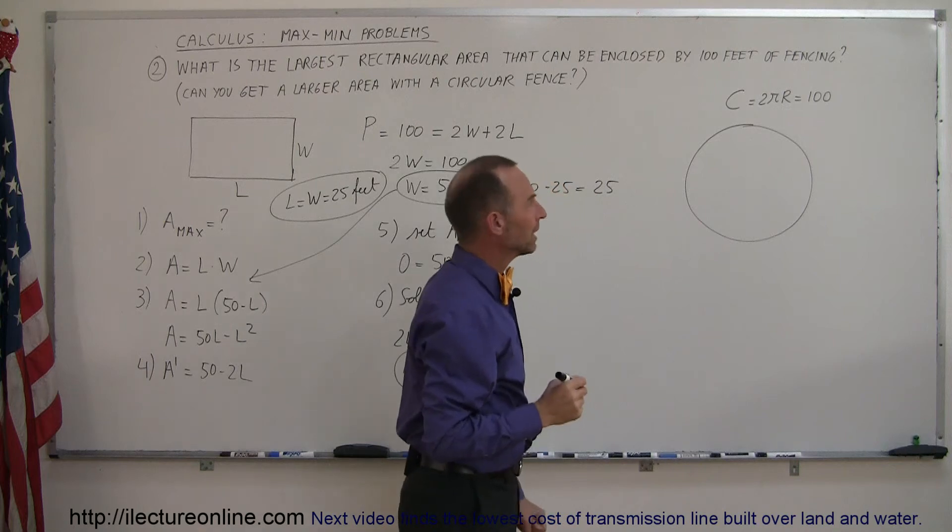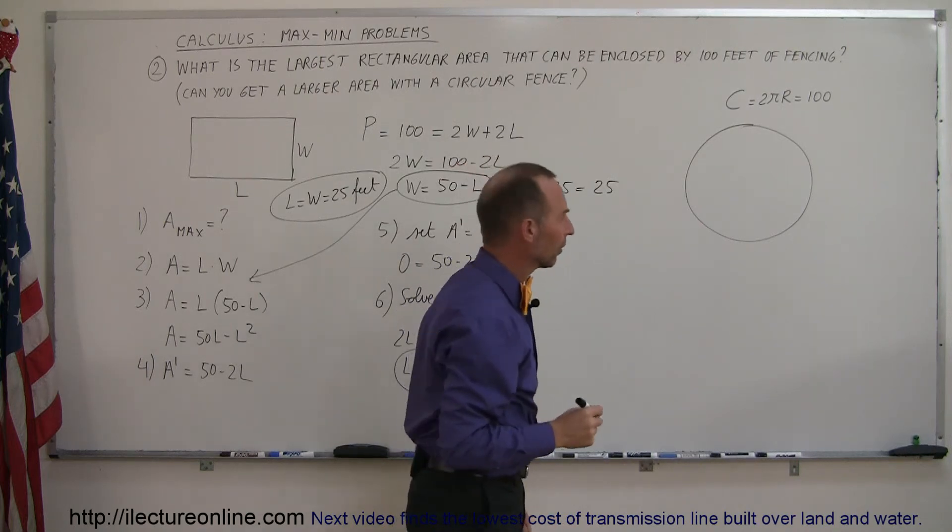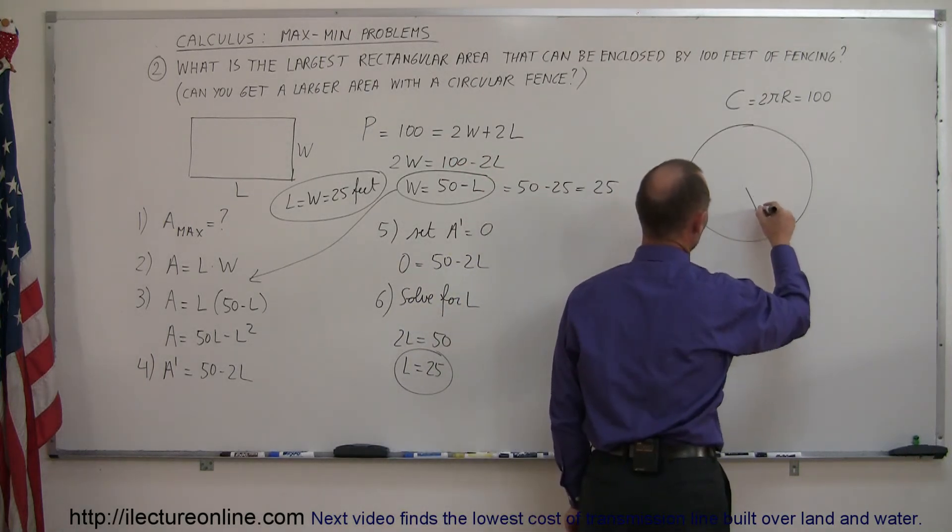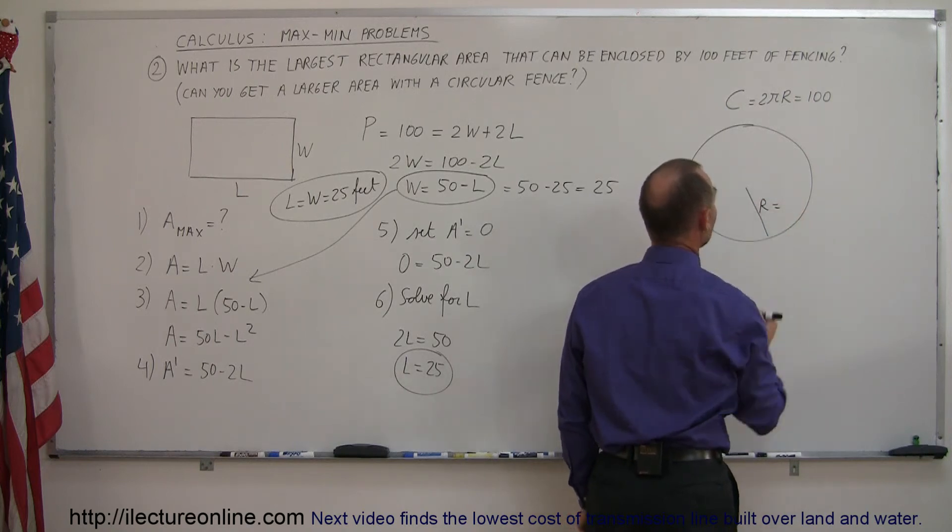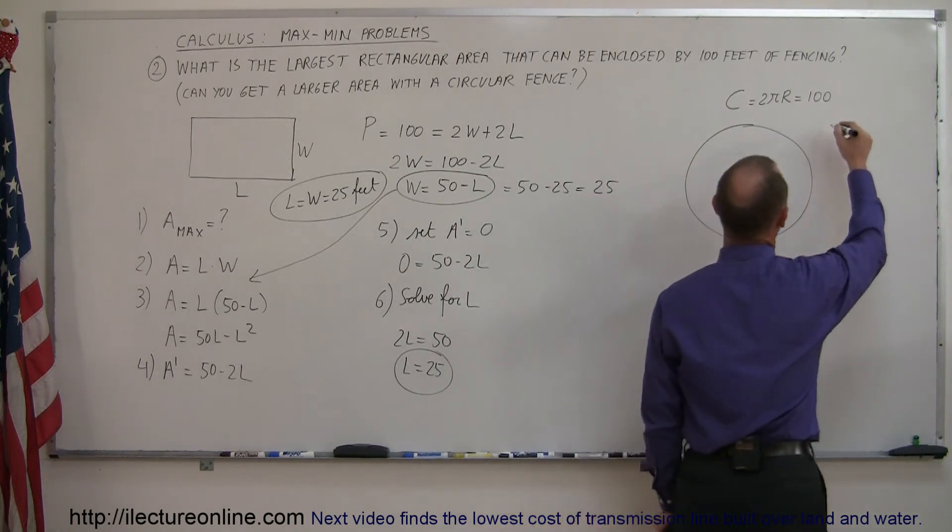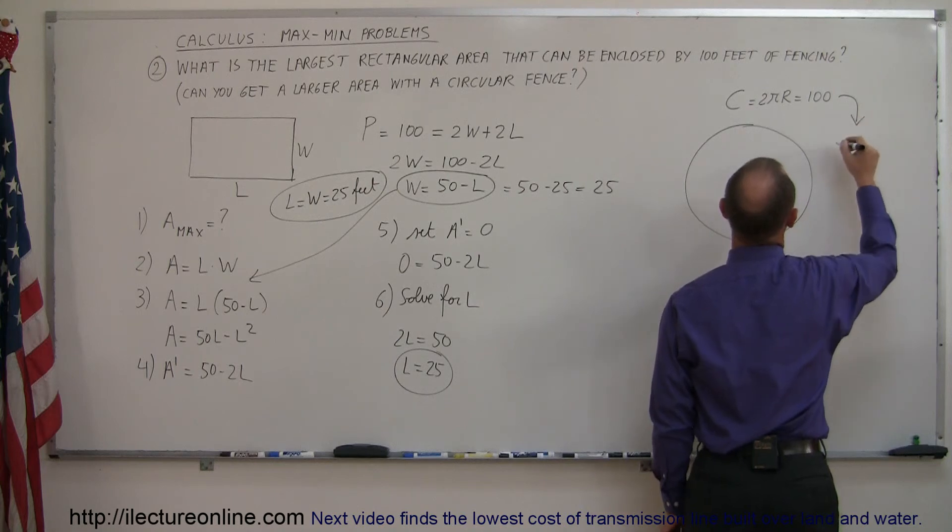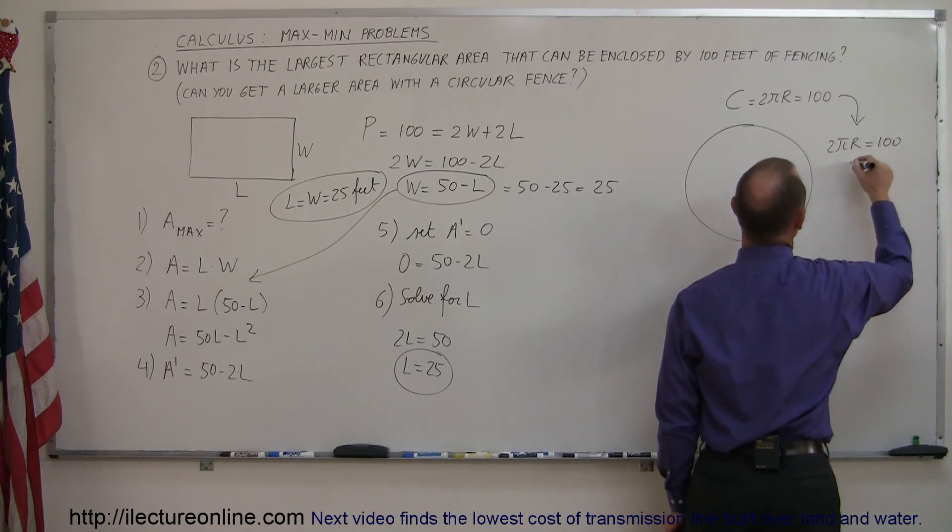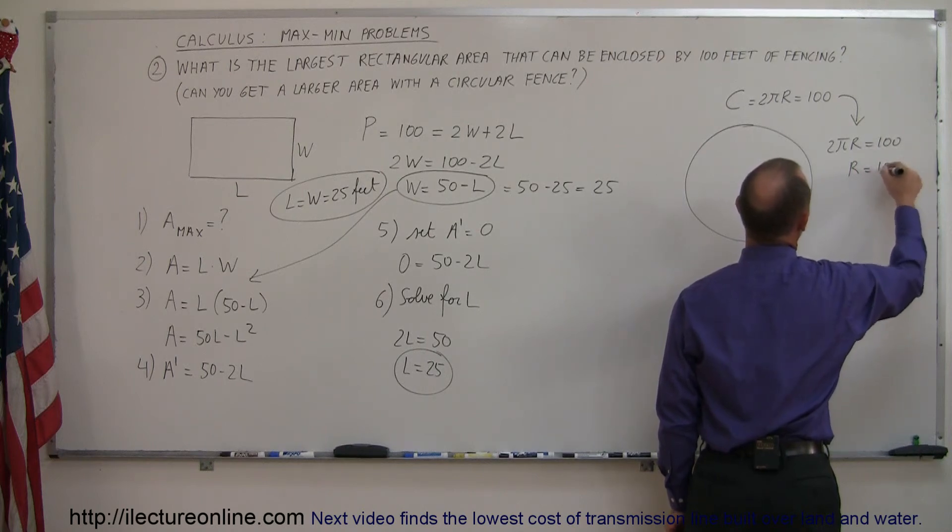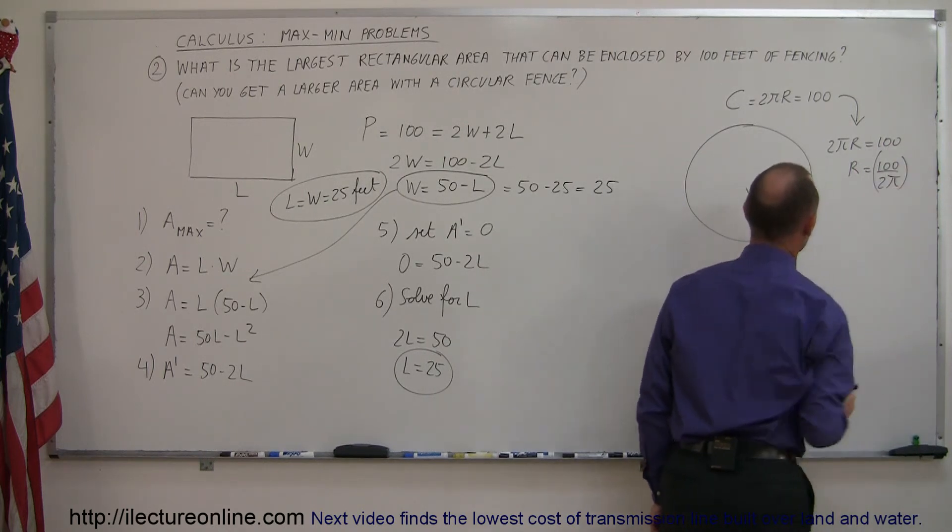So what would be the area of that circle? Well, if the radius is equal to, well, we have to find what the radius is in this case. So from here we can say that 2 pi r equals 100, which means r is equal to 100 divided by 2 pi.